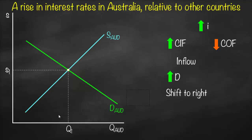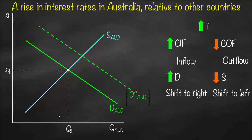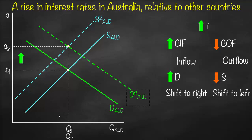Higher cash inflow affects demand, so we have higher demand — the demand curve shifts to the right. At the same time, lower cash outflow means lower supply — the supply curve shifts to the left. So when analyzing interest rate differential, it impacts both the demand and supply curves of Australian dollars. We shift the demand curve to the right as D2, and shift the supply curve to the left as S2. The new equilibrium is the intersection of the new supply and new demand curves, giving us Q2 equal to Q1 and a new higher exchange rate S2.